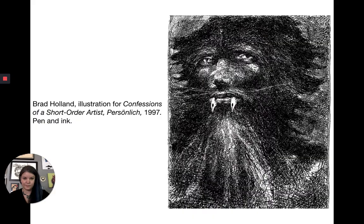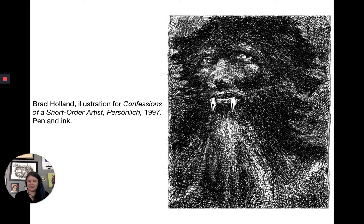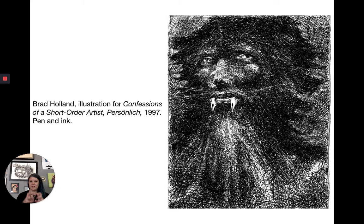This is an illustration by Brad Holland. Unlike the collage, all the texture here is hand-drawn in pen and ink. We get the idea of representation — a face — but it's also fantastical, with pen nibs as teeth on this wolf-man-like creature. You can also see that the tighter together the ink marks are, the darker it is. So we can see the relationship between textural mark-making and value, which is what we're going to talk about next.